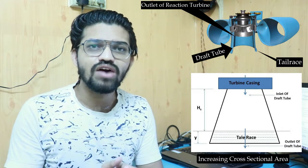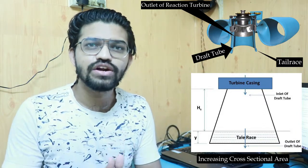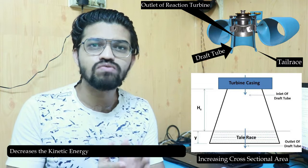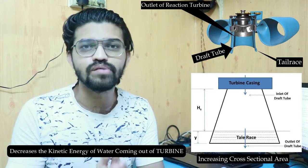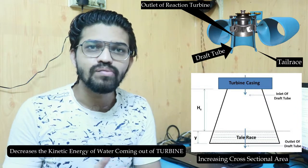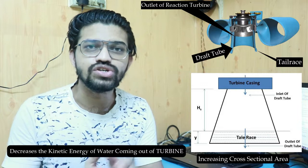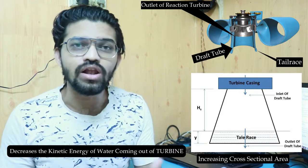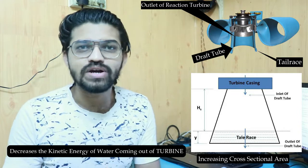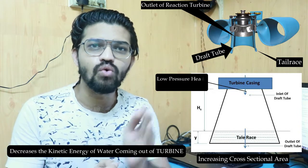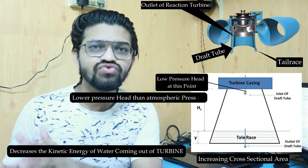This type of draft tube is suitable for the reaction turbine. The draft tube decreases the kinetic energy of the water coming out from the runner of the turbine. At the exit of the turbine, the water has higher velocity and higher kinetic energy, and it is in the form of a whirl. Also, this water will be having lower pressure — the pressure at the exit of the turbine is lower than atmospheric pressure.